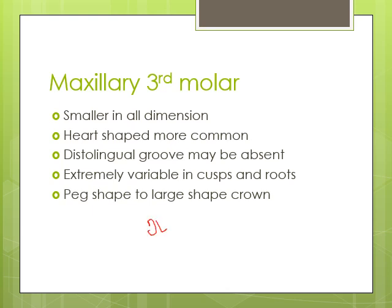There will be no oblique ridge present in the third molars — the oblique ridge is absent. The variability extends from the smallest peg-shaped crown to a large-shaped crown. There could also be variability in the roots; there could be up to six roots present, but three roots are commonly found in the maxillary third molar.